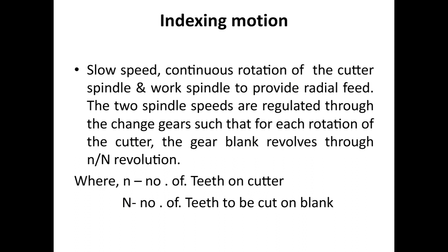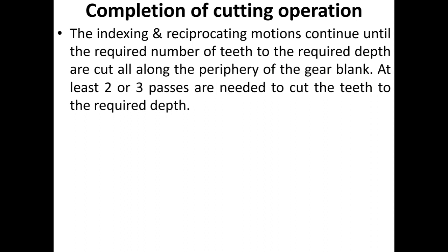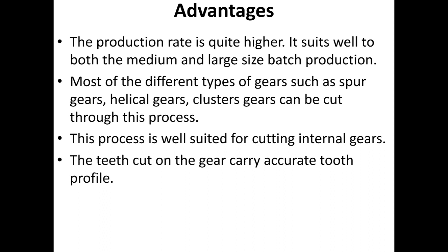The two spindle speeds are regulated through change gears such that for each rotation of the cutter, the gear blank revolves through n/N revolutions, where n denotes the number of teeth on the cutter and N denotes the number of teeth to be cut on the blank. Completion of cutting operation: the indexing and reciprocating motions continue until the required number of teeth to the required depth are cut along the periphery of the gear blank — at least two or three passes are needed.